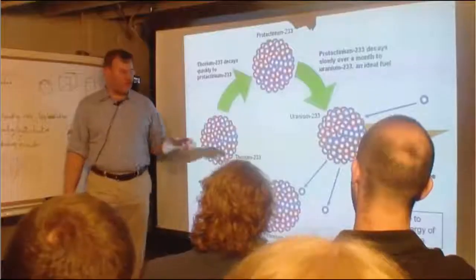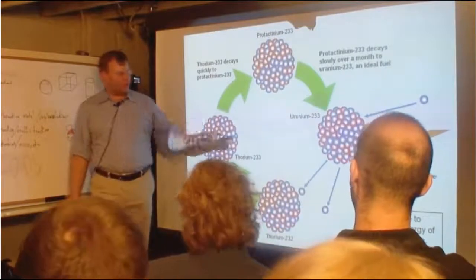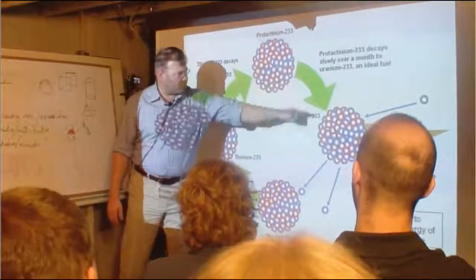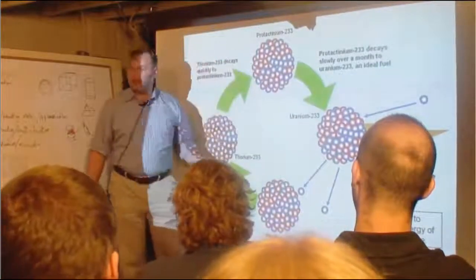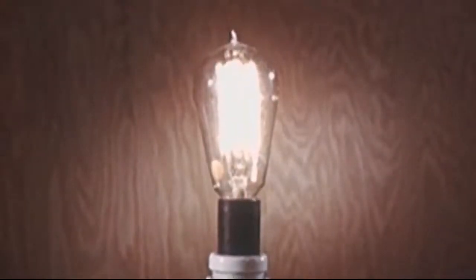Seaborg was absolutely right. He had figured out that thorium could serve as an essentially unlimited nuclear fuel. And he knew how abundant thorium was in the crust of the earth. And he realized that through this process, you could actually sustain the burning of thorium. Of course, you're fissioning uranium-233, but you're making a new one. 5,000 tons of thorium would supply the planet with all of its energy for a year.